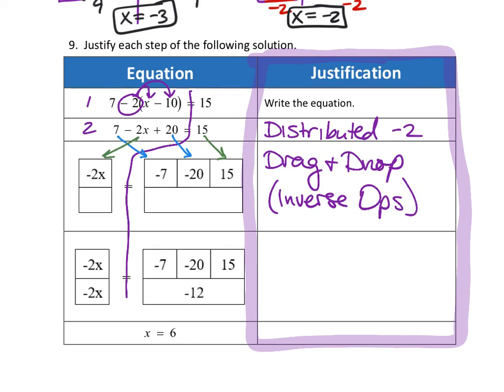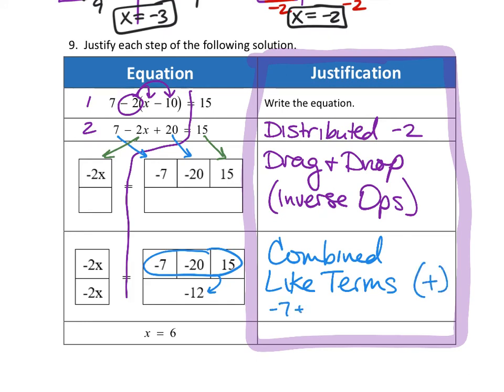Next step, what did they do? They took all of these terms across the top, and they did what? They combined like terms. And remember, that means that you're adding. You may be adding negative numbers, like they said negative 7 plus negative 20 plus 15, but they combined all of those things together to get the number negative 12. Always add, even if you're adding negative numbers.